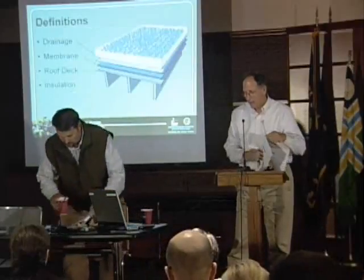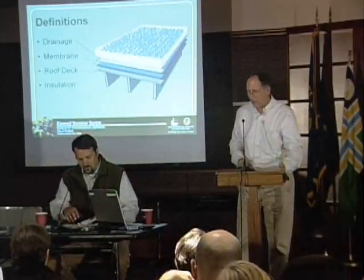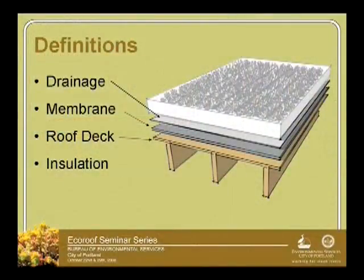Now we're going to talk mainly about membranes. Just to go through the eco-roof layers again: there's the eco-roof portion with the soil and vegetation, then there's typically — although not necessarily required — a drainage layer of some kind, whether it's a gravel material (the older-fashioned way) or new materials developed for drainage. Or the existing soil can provide drainage. Either way, there's some provision for drainage, and then the membrane, and then the deck.